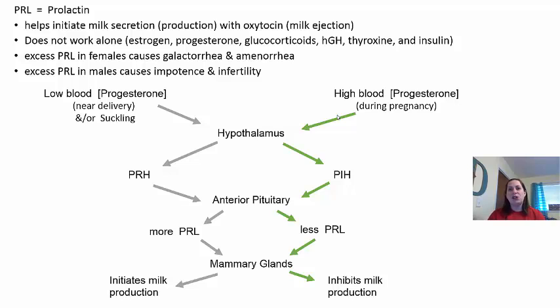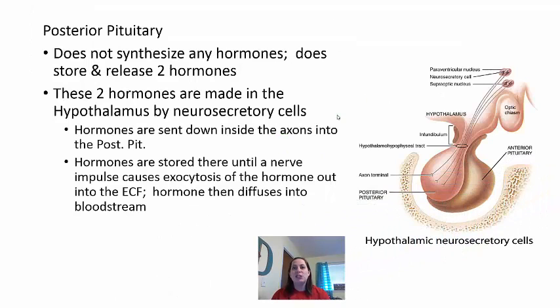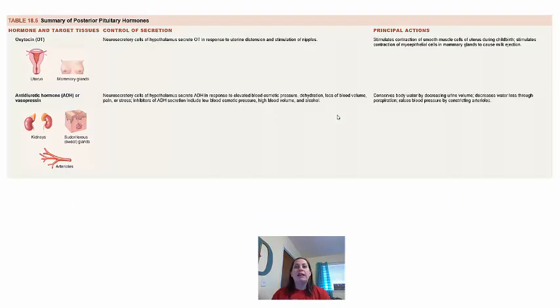Now we switch to the posterior pituitary. It doesn't synthesize hormones — it only stores and releases two hormones made in the hypothalamus by neurosecretory cells. These are sent down to be stored until the posterior pituitary receives nerve impulses from the hypothalamus, then they are excreted via exocytosis into the interstitial fluid and eventually diffuse into the bloodstream. A summary table (Table 18.5, page 631 in the 14th edition) covers these hormones.